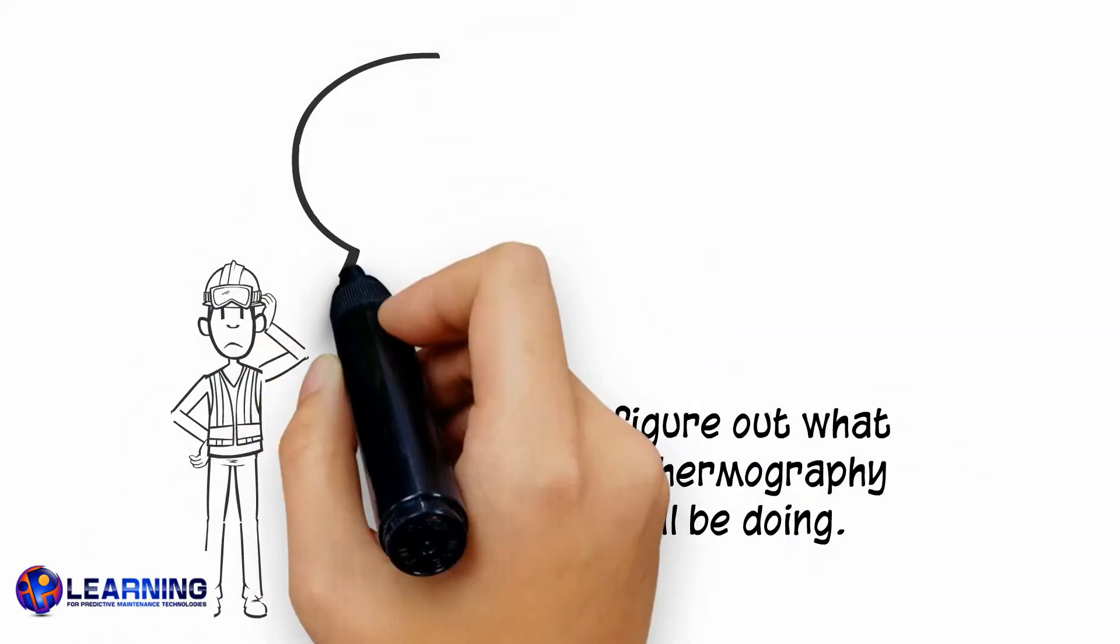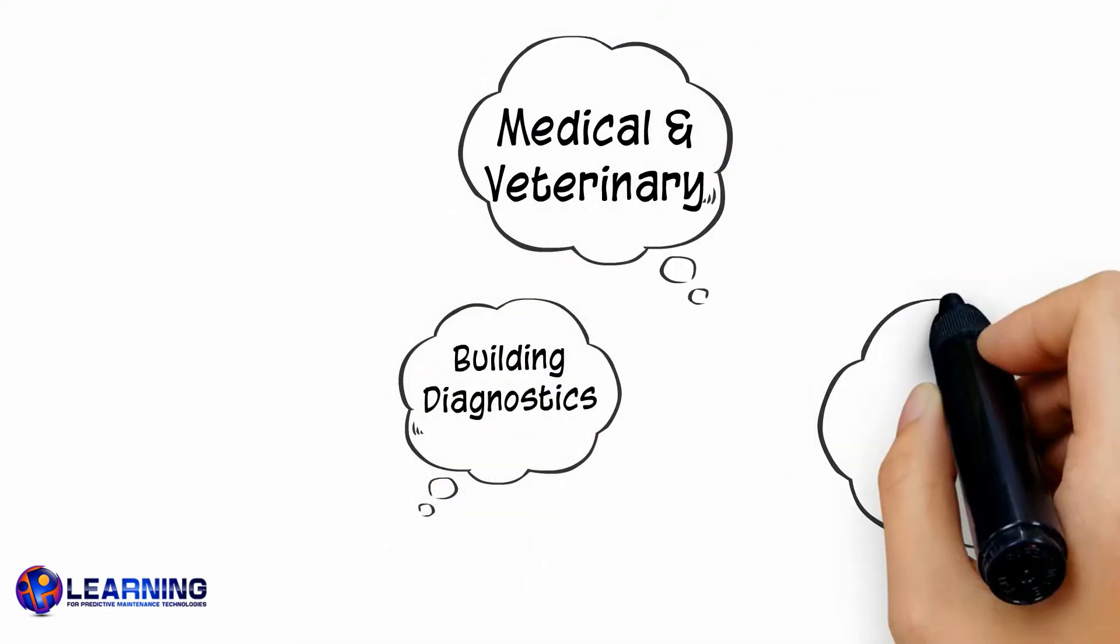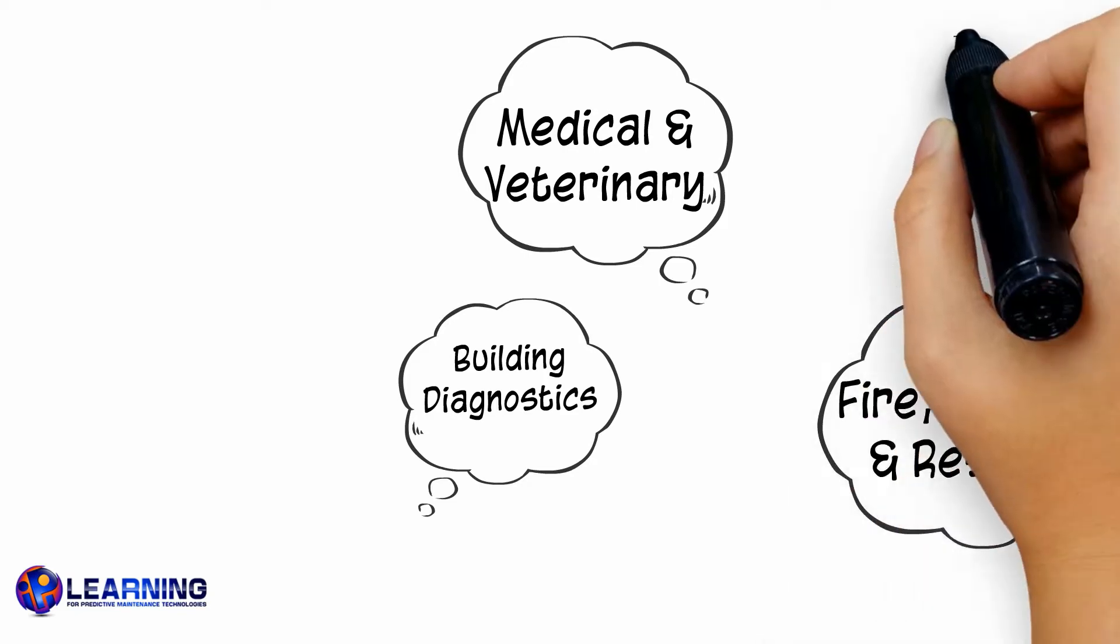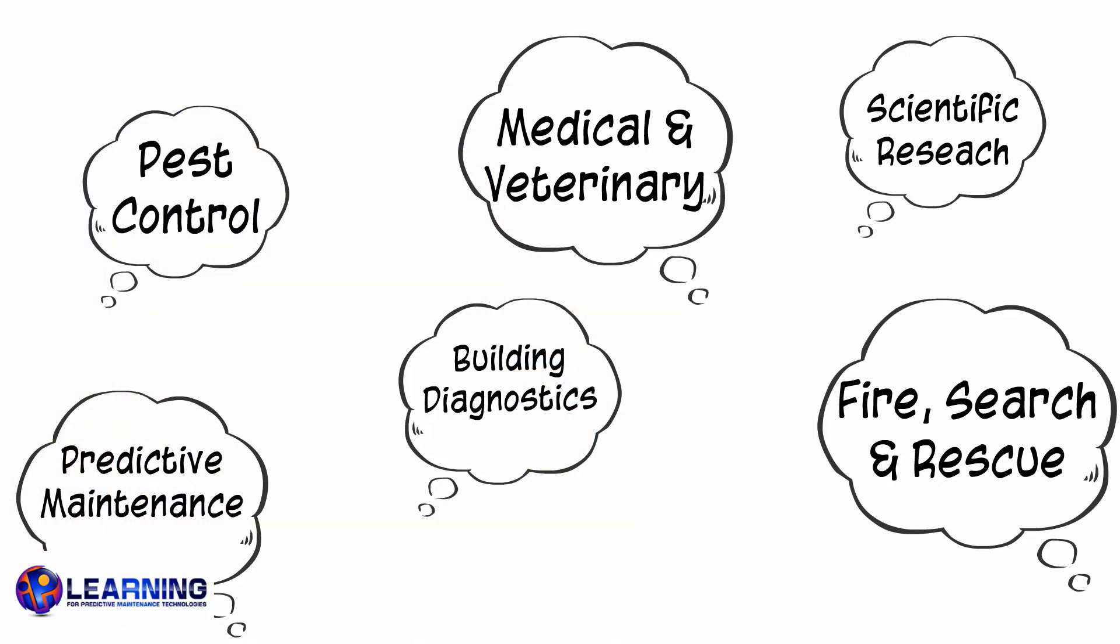First, you need to think about what you will use your camera for. People are constantly finding new ways to use infrared cameras. These include predictive maintenance, pest control, building diagnostics, fire search and rescue, medical and veterinary diagnosis, and scientific research.